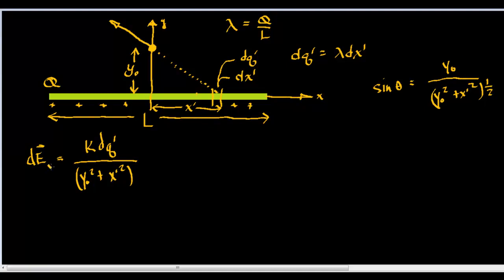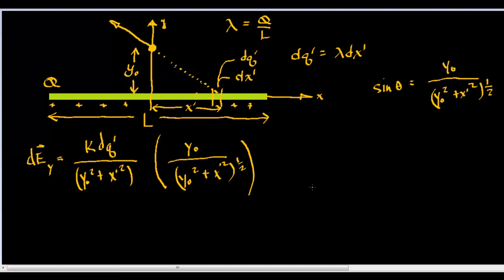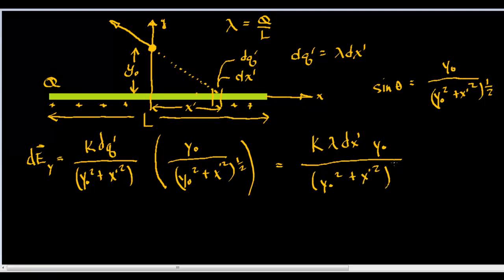We're just doing the y-component: y-naught squared plus x-prime squared to the one-half power. When I combine this together I'll replace dq prime with lambda dx prime, giving k lambda dx prime times y-naught over — and when I multiply these two I add the exponents: 2 over 2 is 1, plus 1 over 2 is 3-halves — so we get y-naught squared plus x-prime squared to the three-halves power.